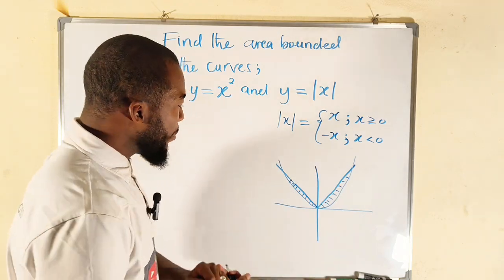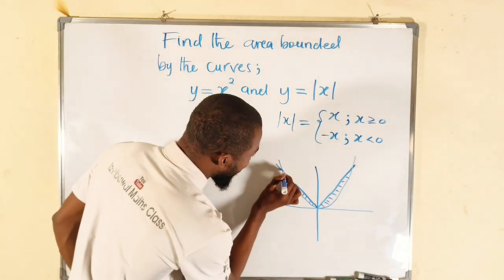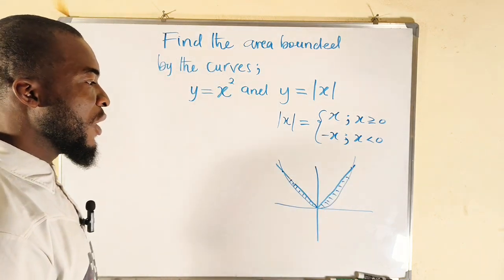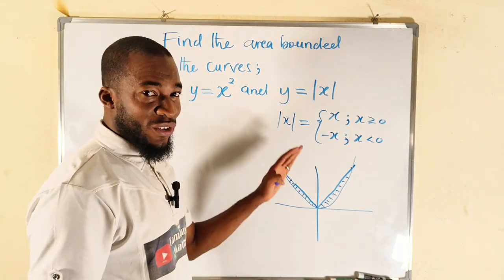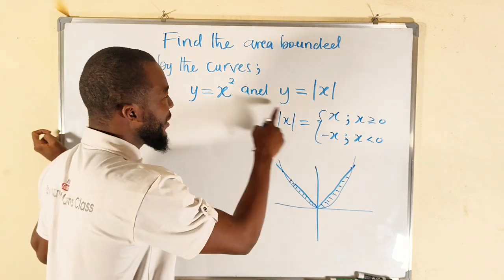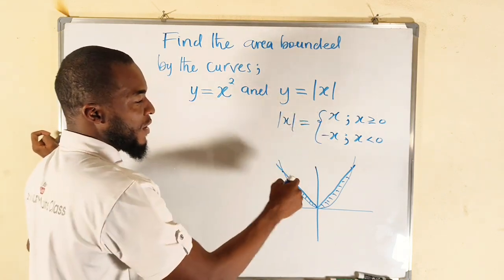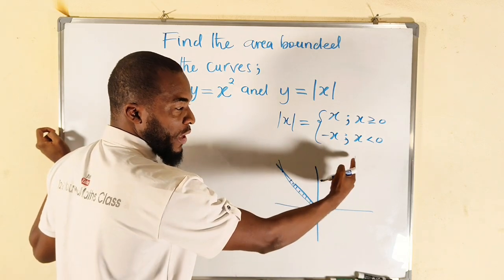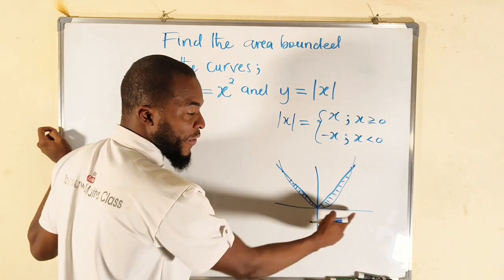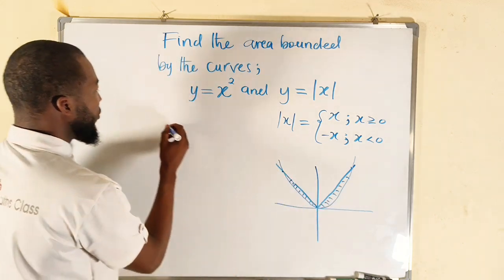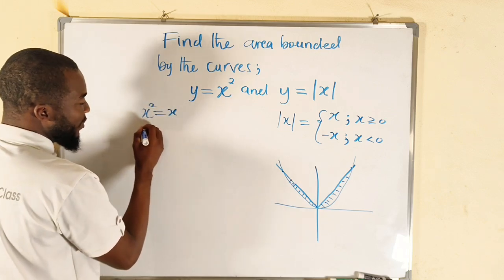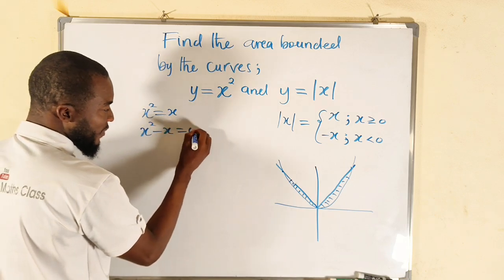But we need to find the points of intersection, the values of x at this point. And how can we do that? We can equate the two functions together. You know x squared can never be equal to negative x, so let us compare x squared and x, such that we're going to get this point. Whatever point we get here, since they are symmetrical, this will be the negative version of this. So if I should take x squared and equate it to be equal to x, it implies that x² - x = 0.